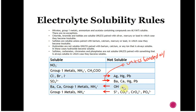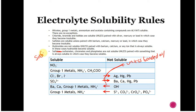Hydroxides are not soluble — there are a couple of exceptions. Hydroxides become soluble when bonded with barium, calcium, group one metals, or ammonium. So barium hydroxide, calcium hydroxide, and sodium hydroxide are all soluble. Sulfides, carbonates, chromates, and phosphates are not going to be soluble unless they're with group one metals or ammonium. If you have a group one metal or the ammonium ion, it is soluble.